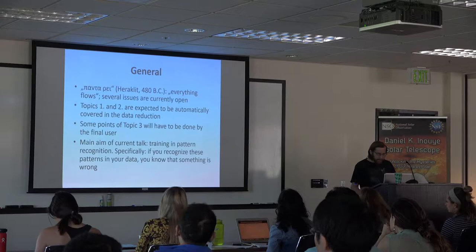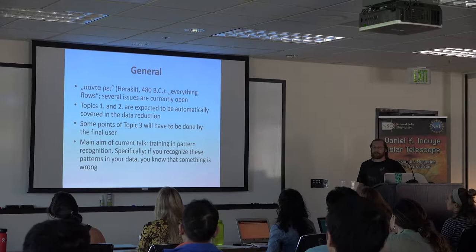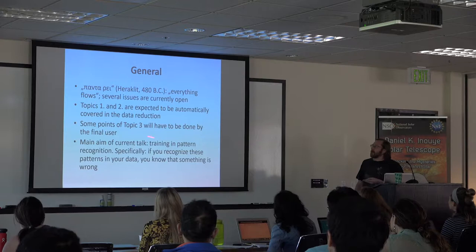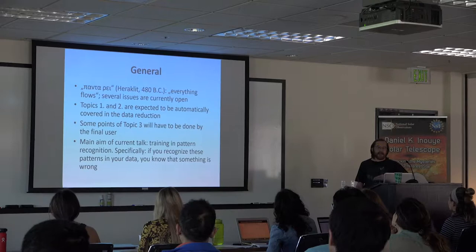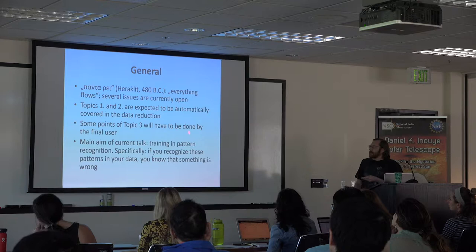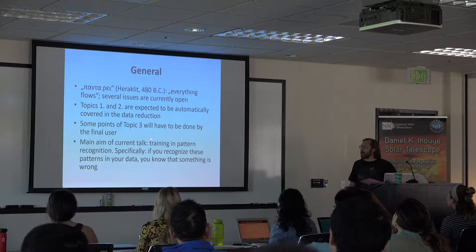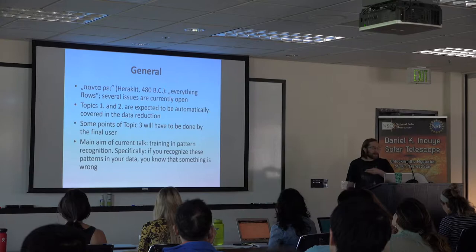In general, one thing — in old Greek, panta rhei, everything is flowing. That is more or less the problem for the DKIST project right now. In some cases we think everything will be covered. For some points it's not clear if the automatic data reduction will be able to capture it. So some stuff might end up on your table. The main aim of the talk is training in pattern recognition — specifically, if you recognize these patterns in your data, you know something went wrong.